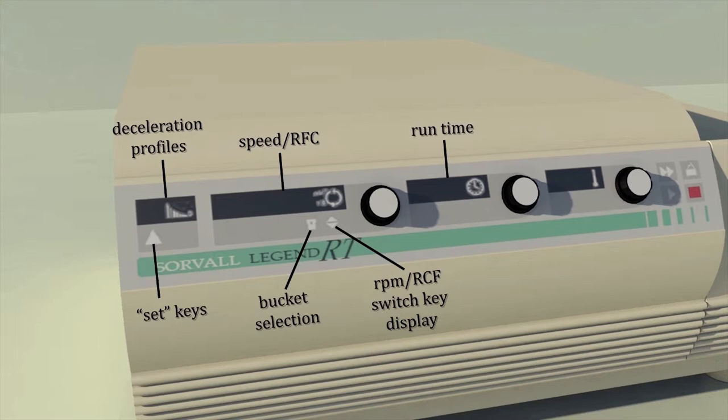The next button is for bucket selection. You use the RCF display with the swinging bucket rotor. Since there are a number of buckets which you can use, you need to select the bucket from a menu.